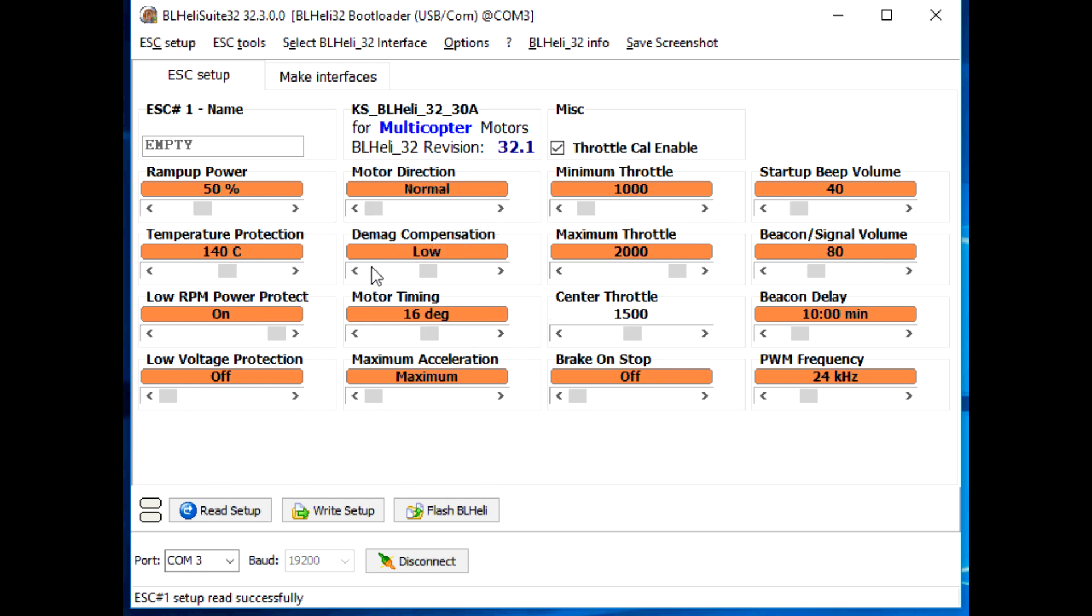Most of these you're going to leave default. Most people leave them default and they work just fine. This is pretty much all automatic. Everything else is pretty much default and that's it. It's ready to go. Just install it and set it up on your Betaflight controller. Everything's pretty easy now with Betaflight and BLHeli 32.